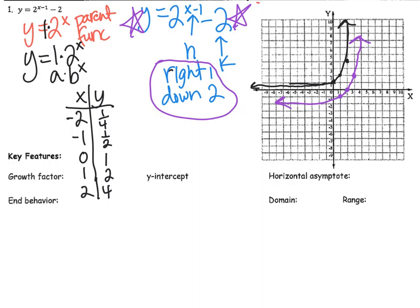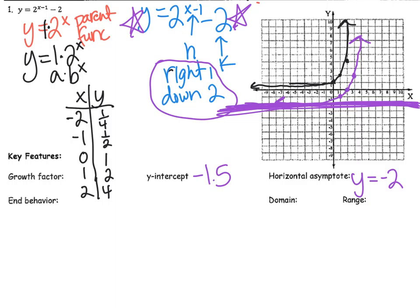My new y-intercept is negative 1.5 in purple. My horizontal asymptote is now y equals negative two — the graph approaches that line but never touches it, like an imaginary fence. The domain is all real numbers, and the range is any number greater than negative two — bigger than the horizontal asymptote.